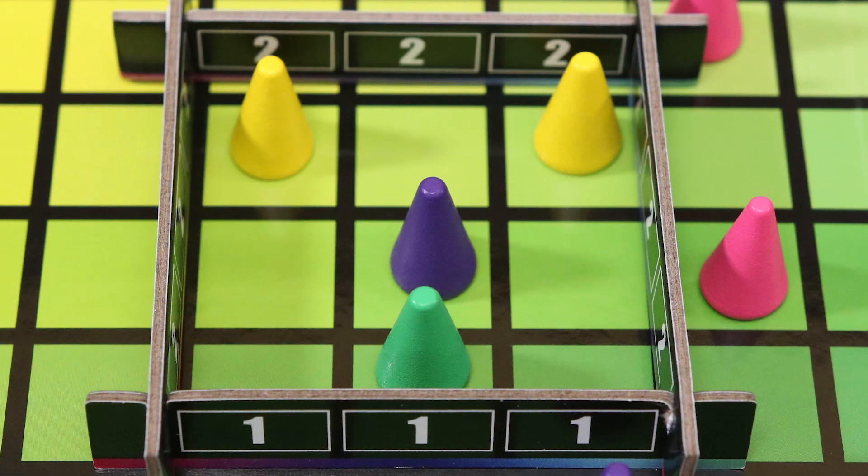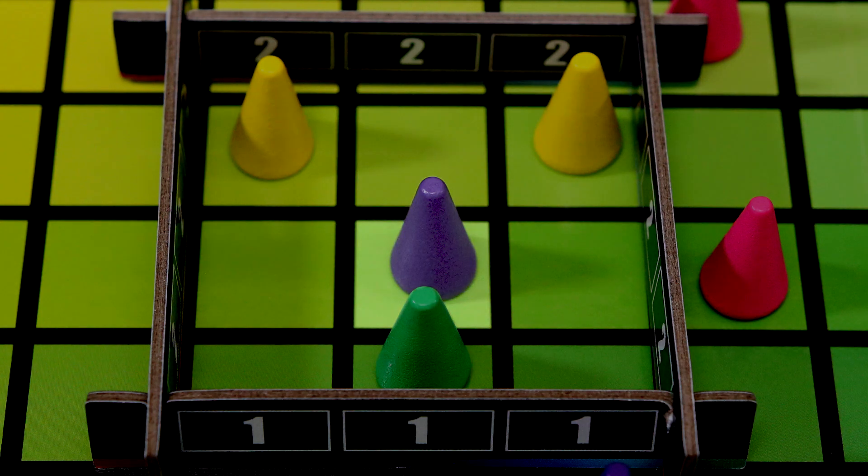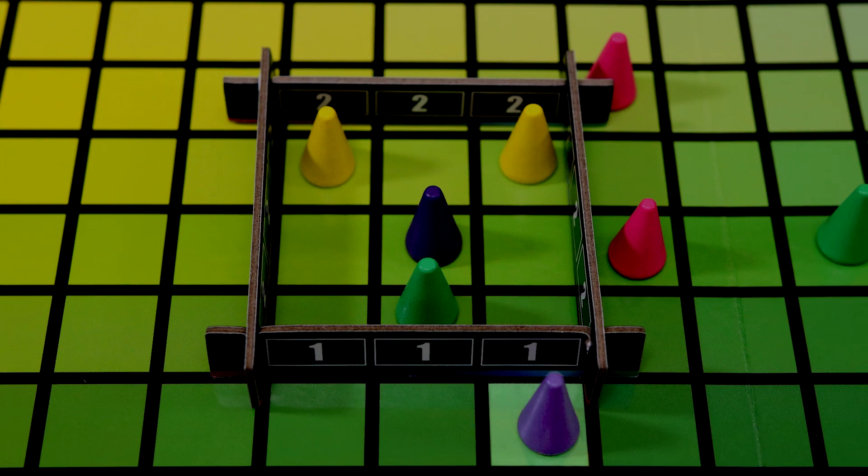Each player piece within the scoring frame will be worth two points to the player the piece belongs to. If a player guessed the exact color of the cue giver, they receive three points, while any player pieces directly adjacent to the scoring frame will receive one point.